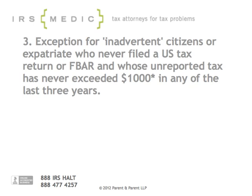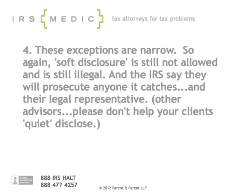Now, this applies as long as your unreported tax — not income, but tax — never exceeds $1,000. There's an asterisk next to that, because there's conflicting information in what the IRS recently published: in one place we see $1,000, and in another place we see $1,500. We hope to get some clarification on that — it's probably going to be the higher number. These exceptions are pretty narrow.